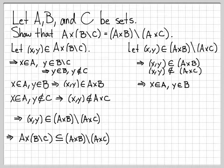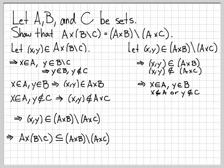From the second condition, (x, y) is not an element of A cross C. How can that happen? That can happen two ways: either x is not in A, or y is not in C. But we've already established from the first condition that (x, y) is an element of A cross B, which means x is in A. So x not in A is not an option — that's not a legitimate choice. Therefore, for (x, y) to not be an element of A cross C, it must be the case that y is not an element of C.